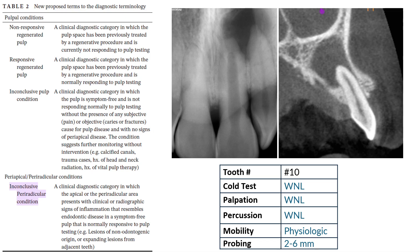Their suggested diagnosis includes an added inconclusive category for both pulpal and periapical diagnosis. An inconclusive pulpal condition is defined as a clinical diagnostic category in which the pulp is symptom-free and not responding normally to pulp testing, without the presence of any subjective pain or objective caries or fractures as cause for pulp disease, and with no signs of periapical disease — suggesting further monitoring without intervention.